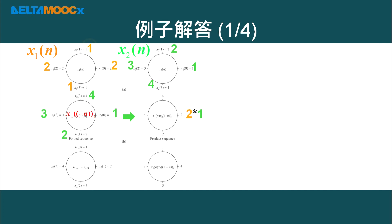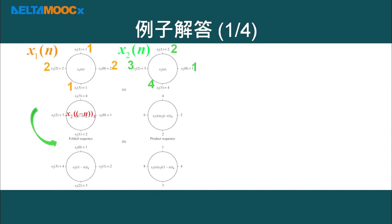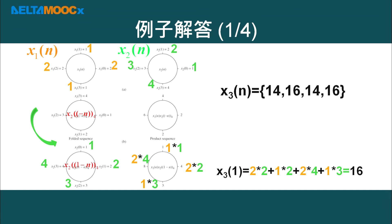First, we fold S2 to get S2(-n) mod 4 by swapping indices 4 and 2, and 1 and 3. Then we multiply element-wise with S1(n) and sum to get S3(0). For S3(1), we shift S2(-n) mod 4 by one unit counter-clockwise to get [2,1,4,3], multiply with S1(n), and sum to get S3(1) = 16. Continuing this process, we obtain the full circular convolution result sequence.